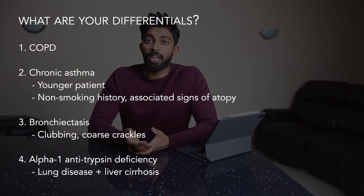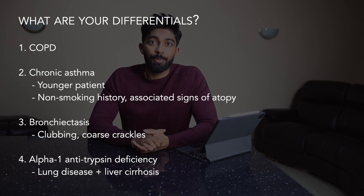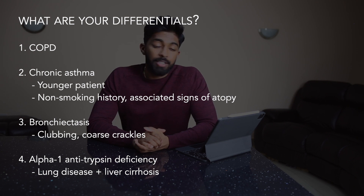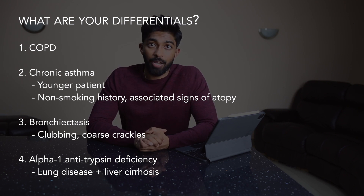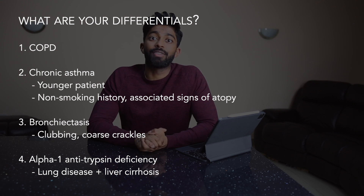You'll likely be asked for a list of differentials. My number one differential would be chronic obstructive pulmonary disease, given the signs elicited. I would also consider chronic asthma, although this would more likely present in a younger patient with a non-smoking history and associated signs of atopy. Other differentials include bronchiectasis, where I would expect clubbing as well as coarse crackles. Another differential to consider would be alpha-1 antitrypsin deficiency, which presents with lung disease as well as signs of liver cirrhosis.